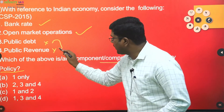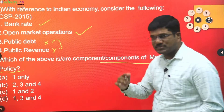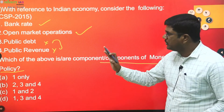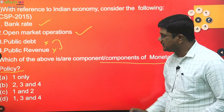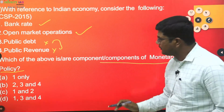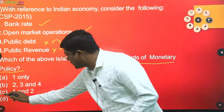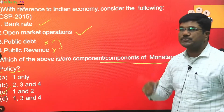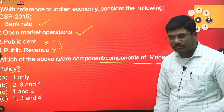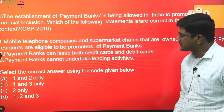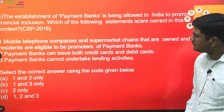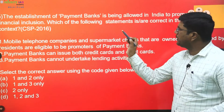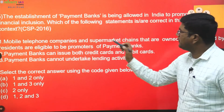Public debt and public revenue are part of public finance, so they are not part of monetary policy. Therefore the answer is option C — only bank rate and open market operations.